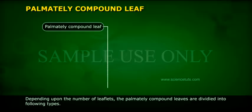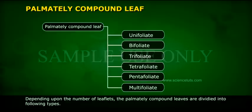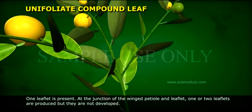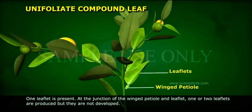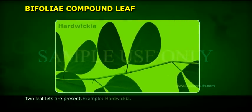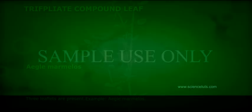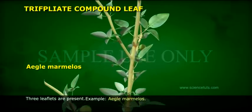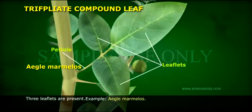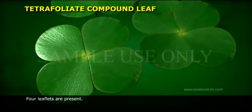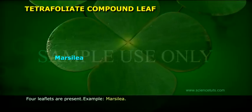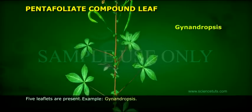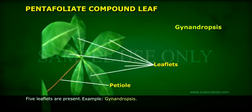Depending upon the number of leaflets, the palmately compound leaves are divided into the following types: Unifoliate compound leaf — one leaflet is present at the junction of the winged petiole and leaflet; one or two leaflets are produced but not fully developed. Example: Citrus. Bifoliate compound leaf — two leaflets are present. Example: Hardwickia. Trifoliate compound leaf — three leaflets are present. Example: Aegle marmelos. Tetrafoliate compound leaf — four leaflets are present. Example: Marsilea. Pentafoliate compound leaf — five leaflets are present. Example: Gynandropsis.